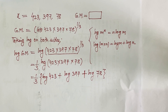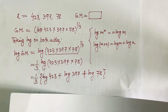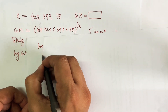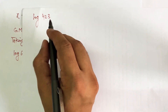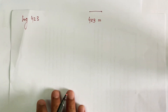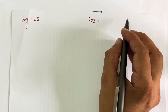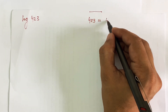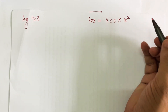The only challenge left is to calculate log(423), log(397), and log(78). To find log(423), I write 423 in decimal format with one digit on the left of the decimal: 4.23 × 10². The answer will start with 2 (from the power of 10), plus the table value. I look up 42 in the row and 3 in the column of the log table.